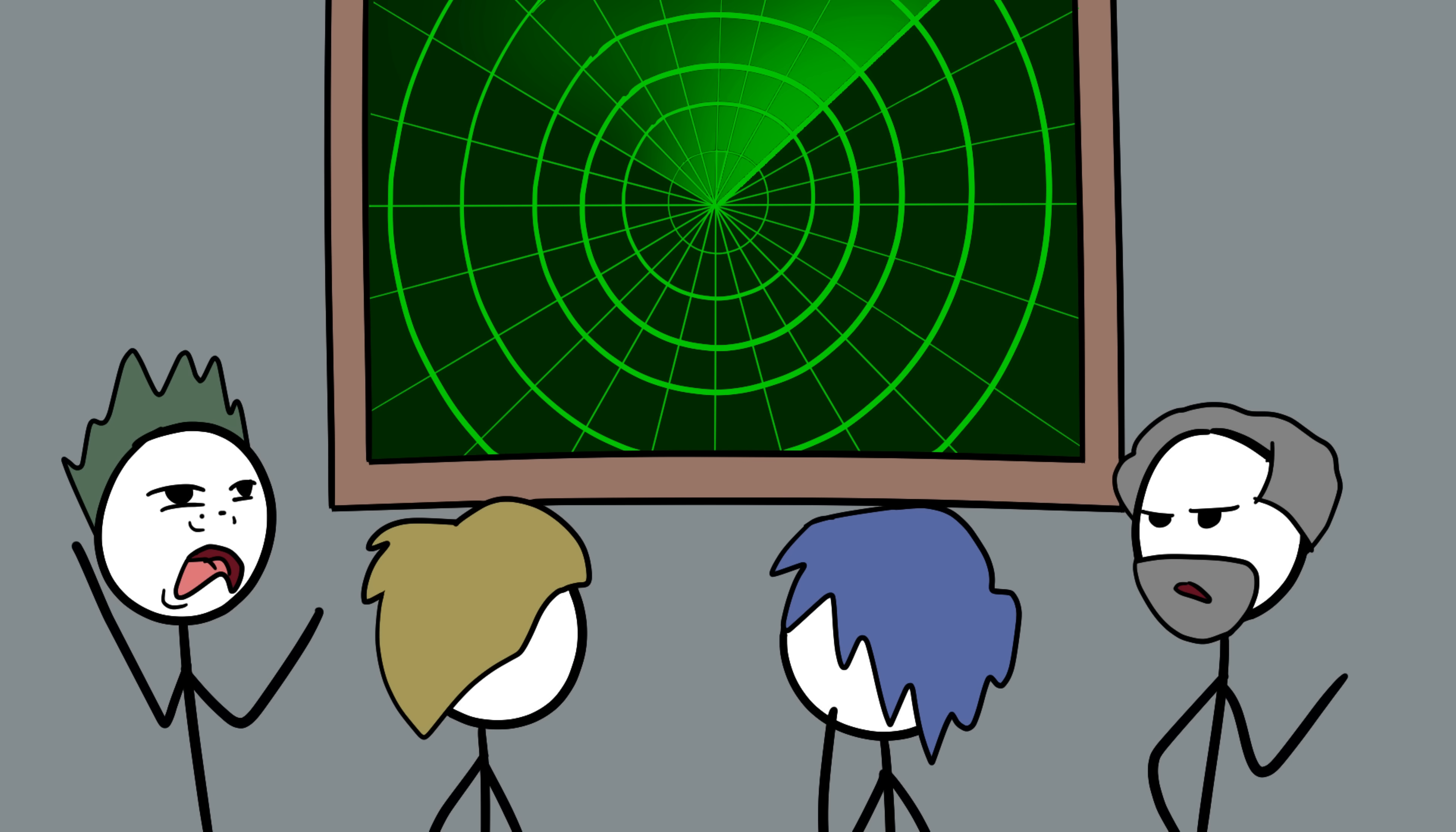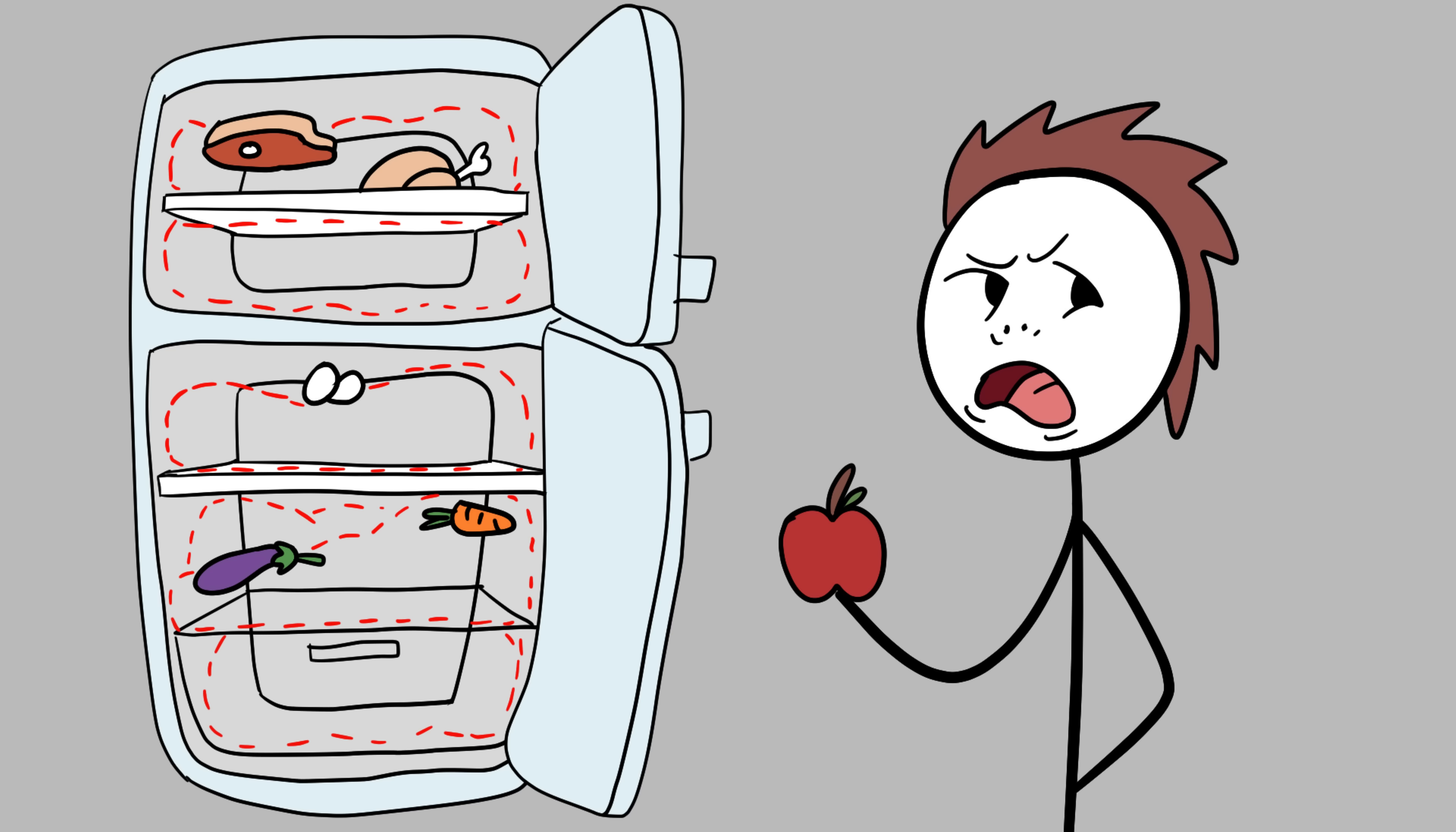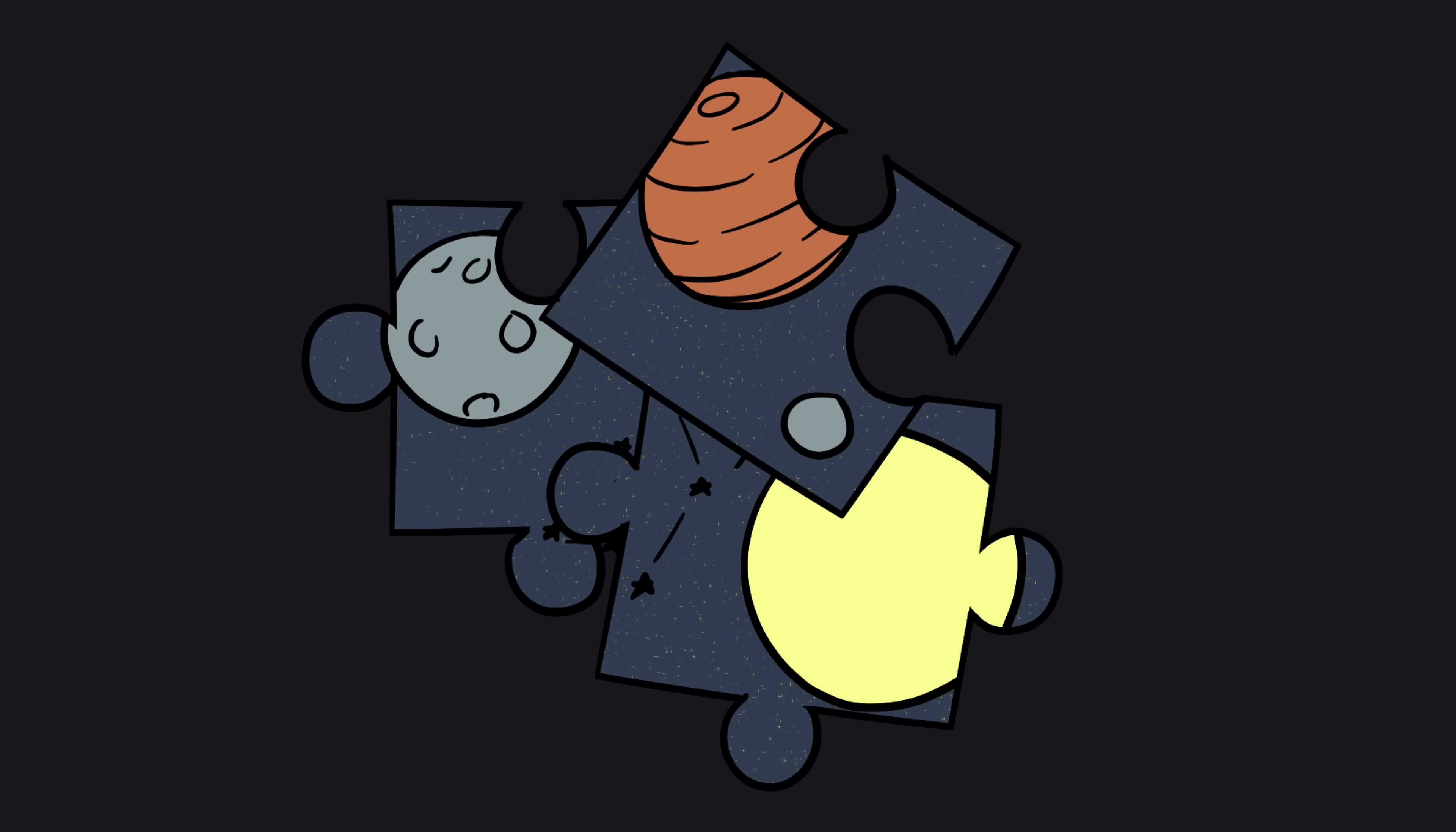The weirdness goes deeper. If dark matter makes up a quarter of the universe, it means we don't actually know the composition of most of reality. Imagine if you opened your fridge and discovered that 95% of its contents were invisible, untouchable, but still shaped how everything else inside behaved. That's where science stands with the cosmos. Dark matter is the ultimate cosmic riddle, one that redefines how much we don't know about the universe we live in.